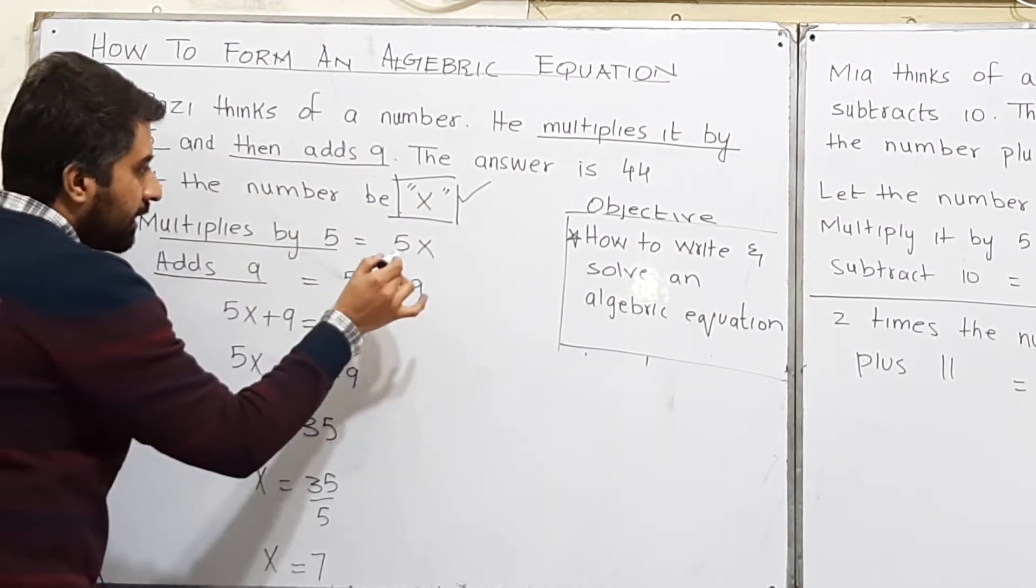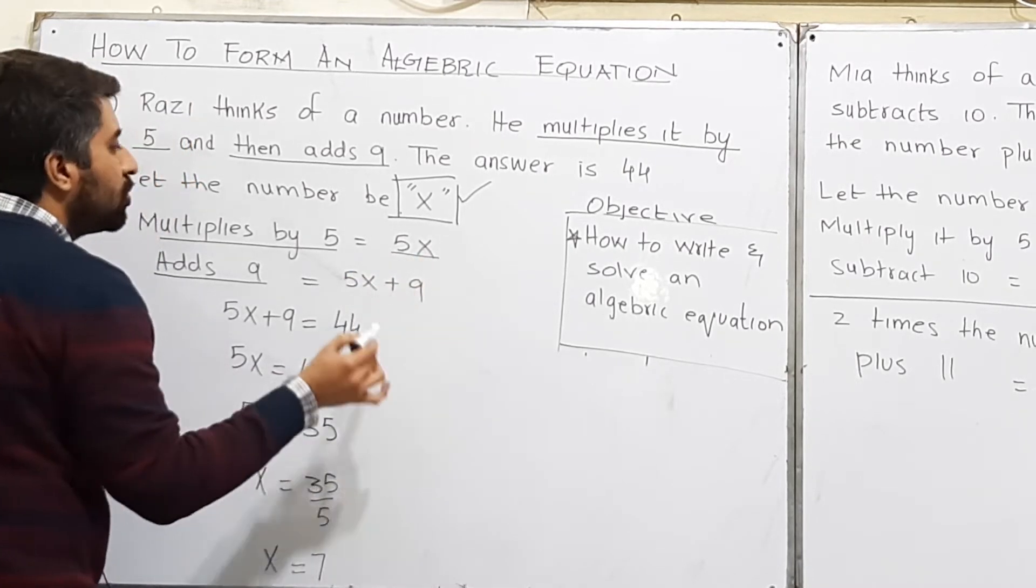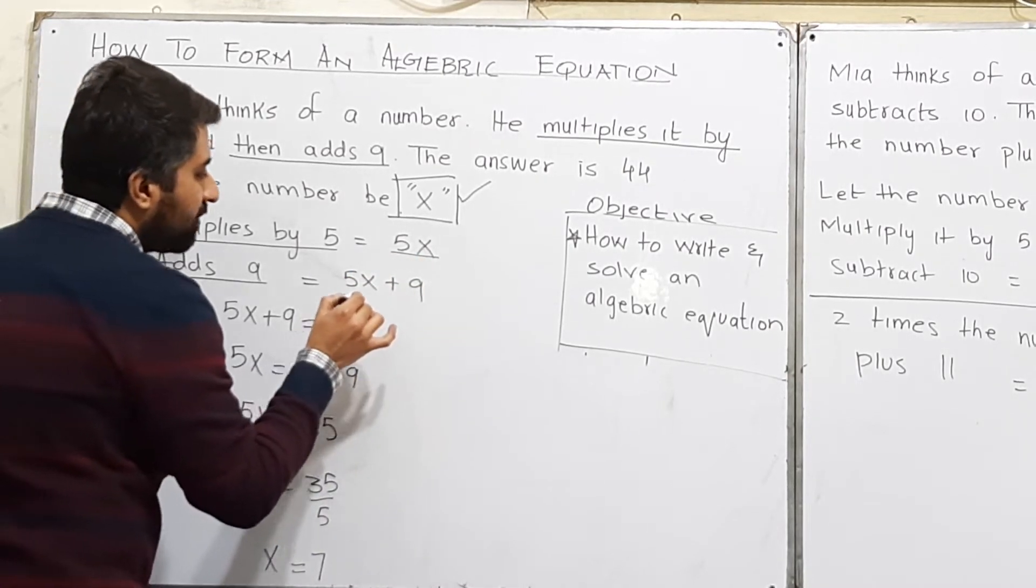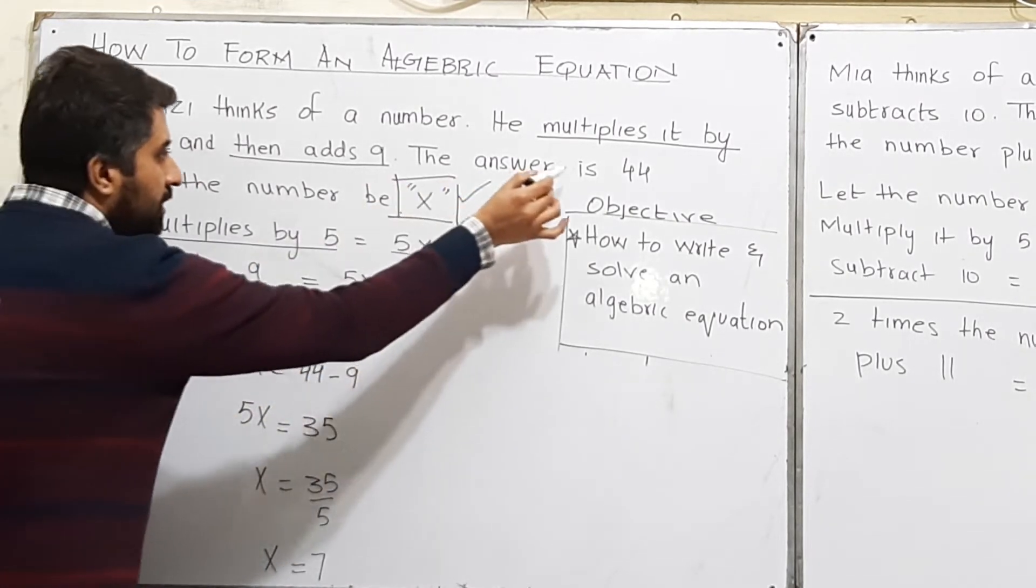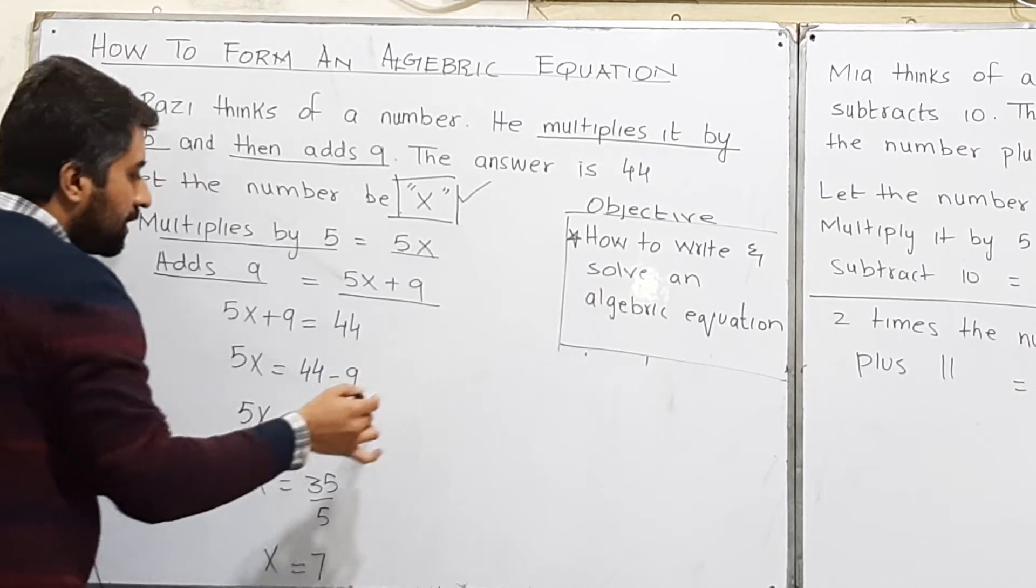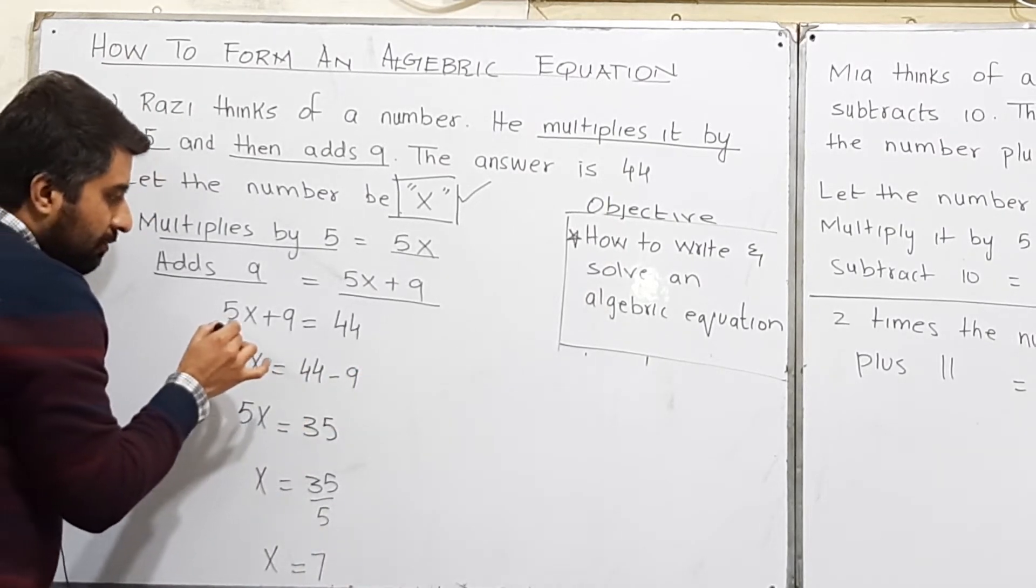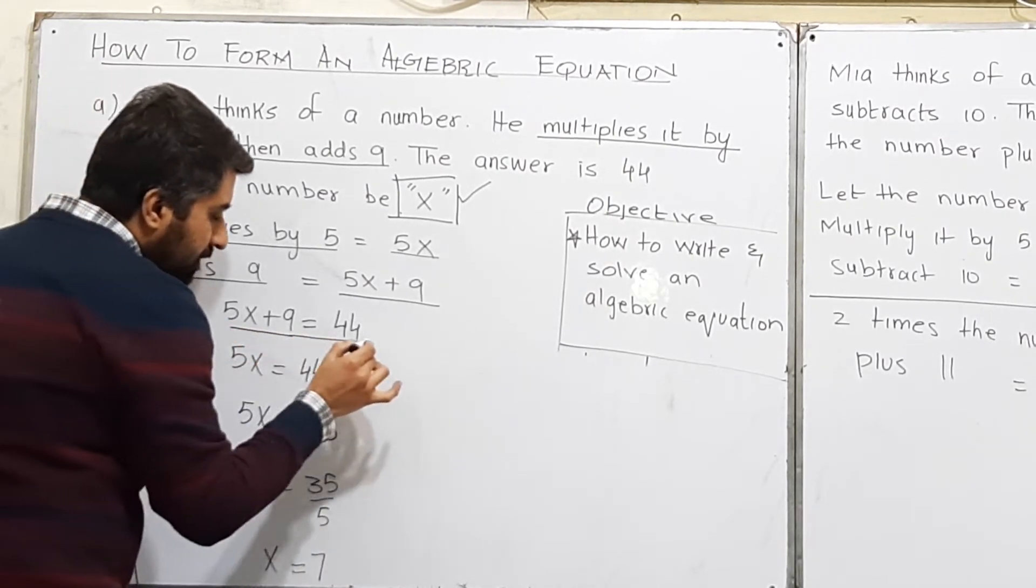Add 9 in 5x, you will get 5x plus 9. Now, the answer for this is 44, which means 5x plus 9 is equal to 44.